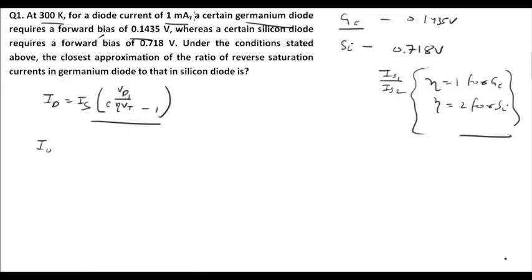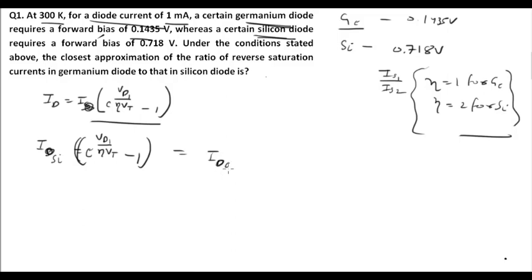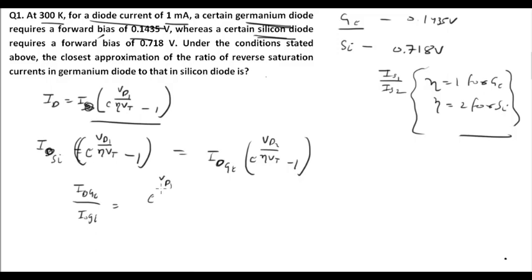For both the germanium diode and silicon diode, the diode current is equal to 1 mA. So I can write: I0_silicon × (e^(Vd1 / (η·Vt)) − 1) = I0_germanium × (e^(Vd2 / (η·Vt)) − 1). Therefore the ratio I0_Ge / I0_Si = (e^(Vd1/(η·Vt)) − 1) / (e^(Vd2/(η·Vt)) − 1).